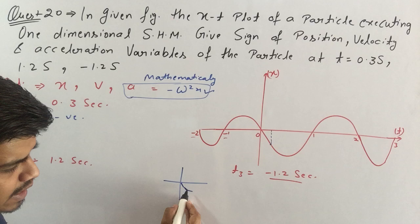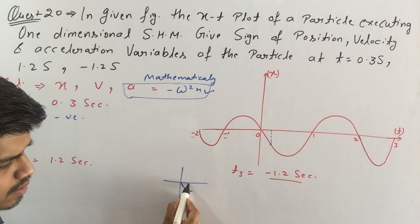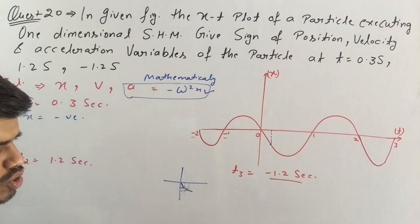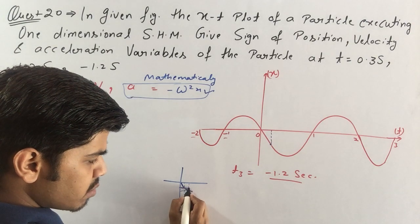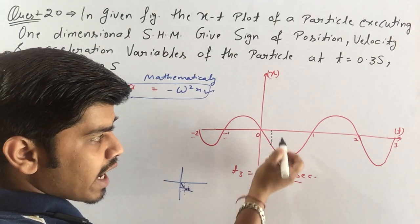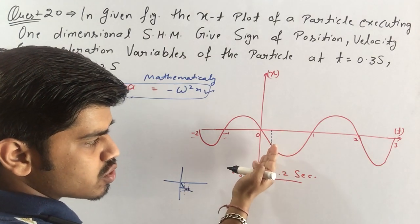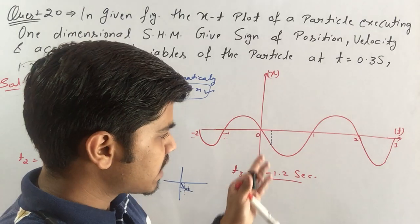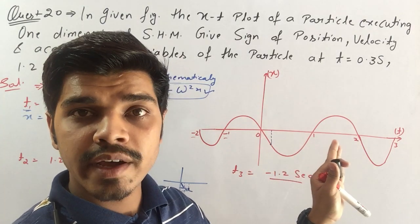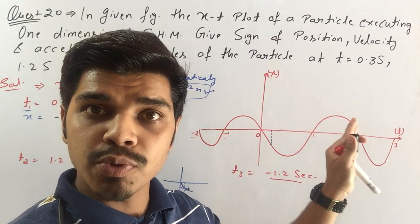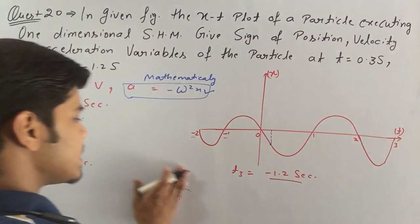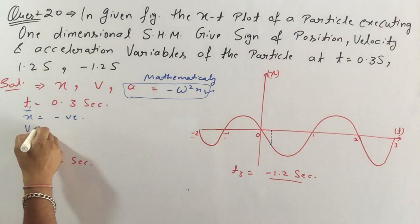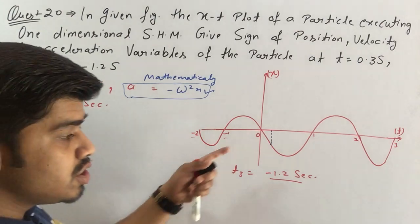To find slope we need to look at change in time axis and position axis. And you see the change in position is negative but change in time is positive. And change in position by change in time is velocity, so can I say velocity is negative because change in position is negative.